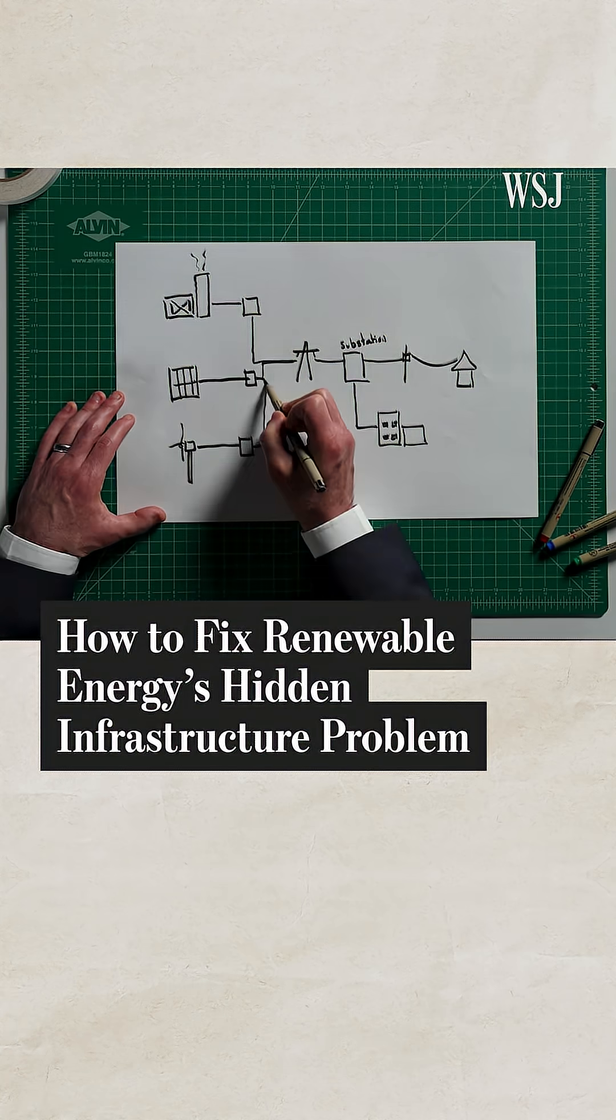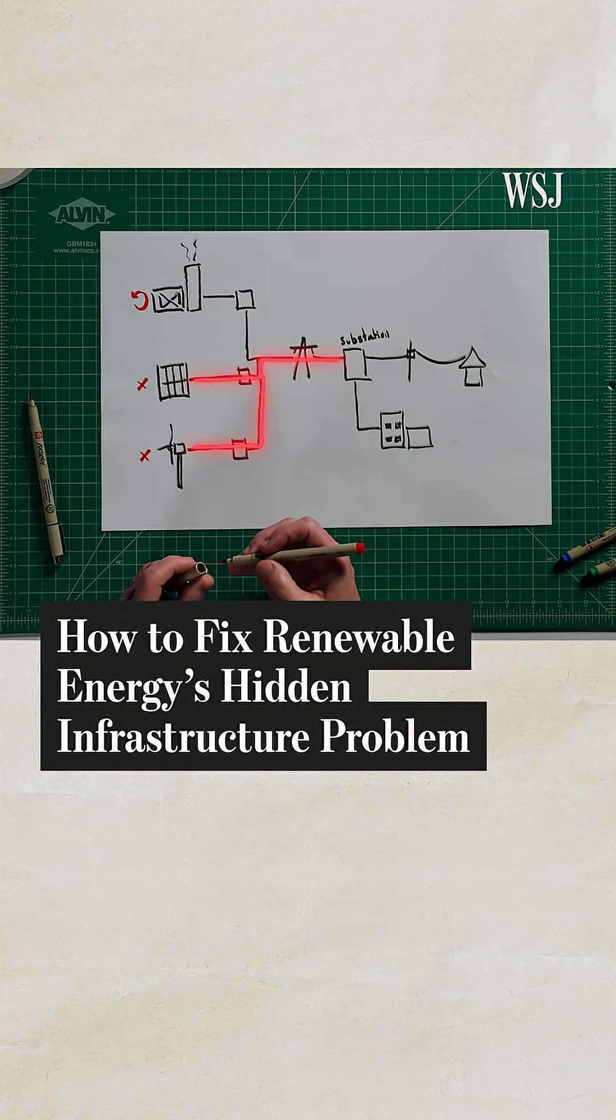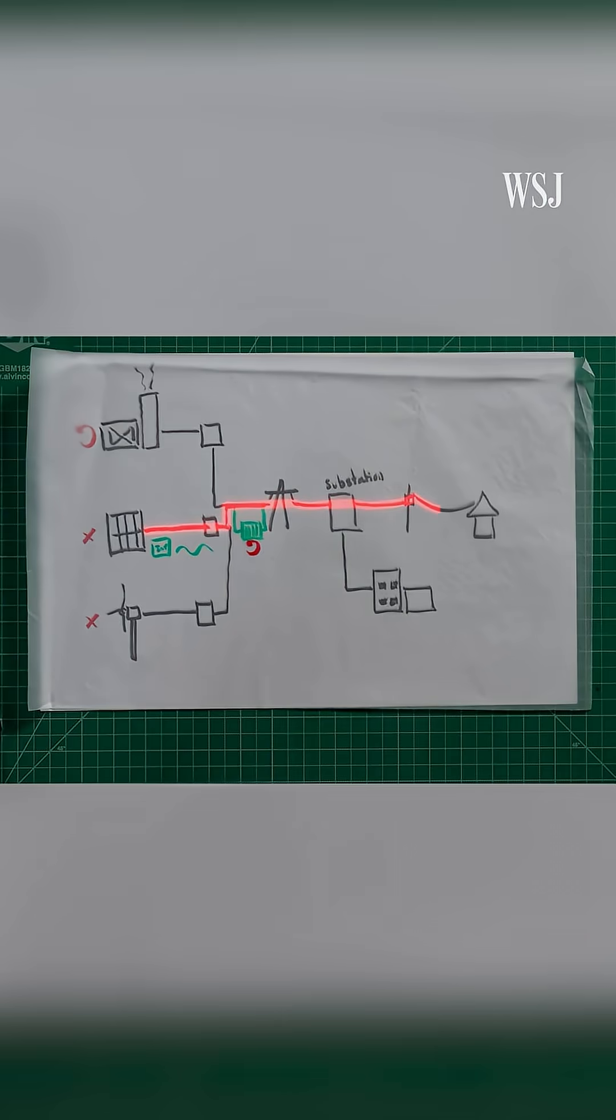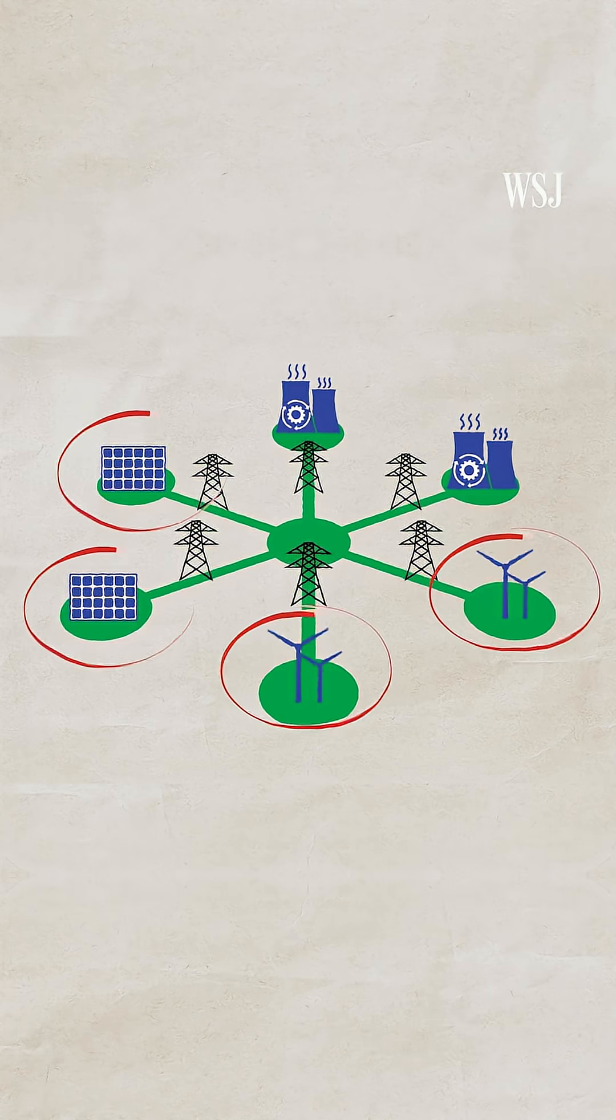Renewable energy, like wind and solar, has created a hidden infrastructure problem. The issue is that power grids, which carry electricity to homes and businesses, weren't designed for wind and solar.